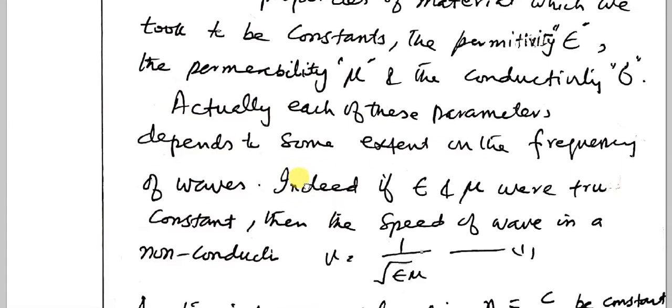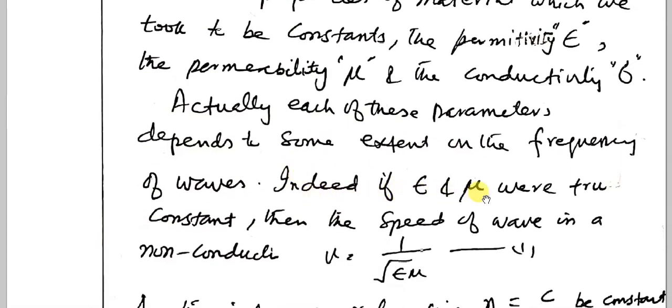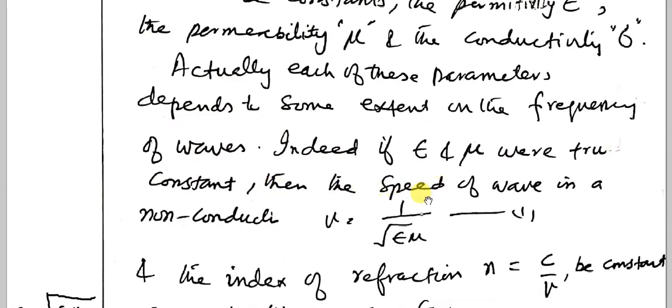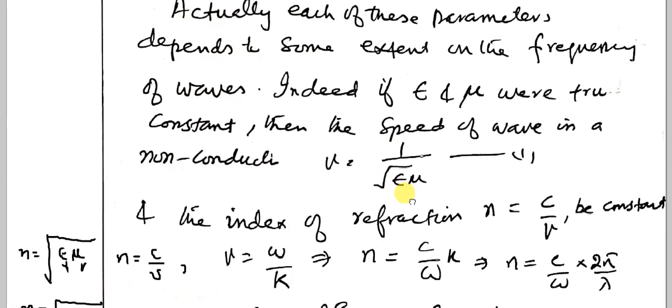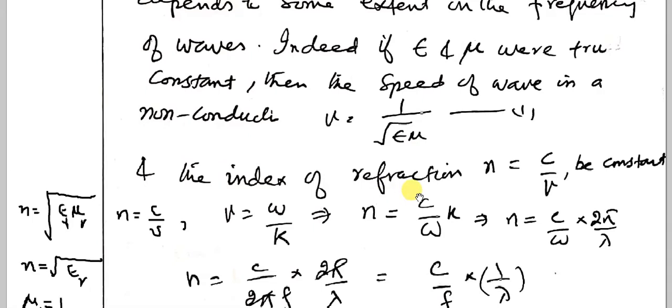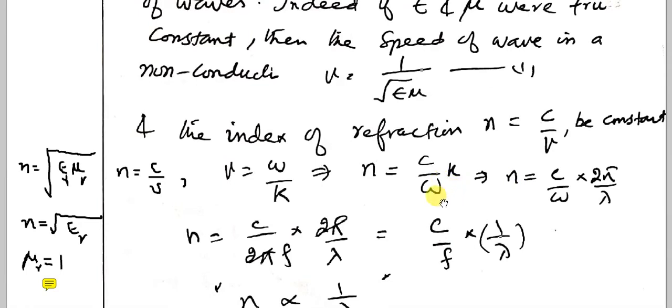Indeed, if epsilon and mu were true constants, then the speed of the wave in a non-conductor is V equals one over square root of epsilon mu, and the indices of refraction is n equals C by V. Since the speed of the wave is also defined as omega by k, we put that into the relation n equals C by V, so we get n equals Ck by omega.